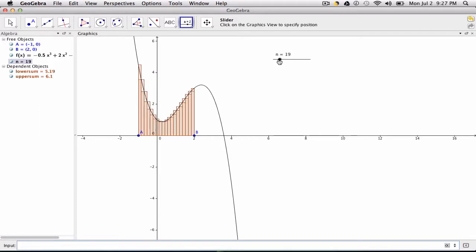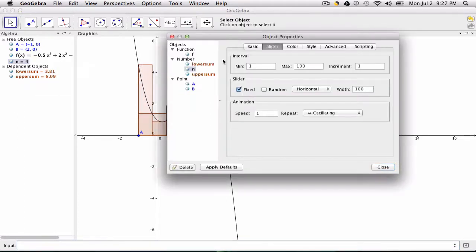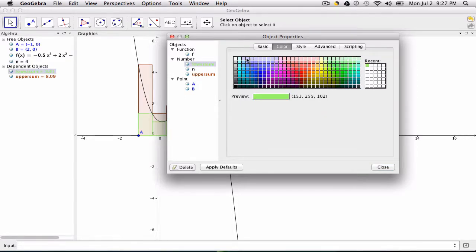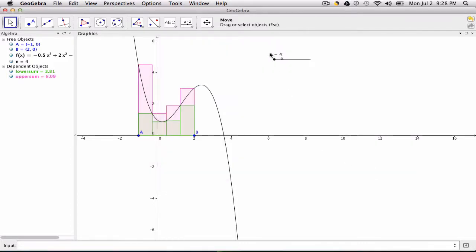Now you could change of course the colors here if you go to your object properties by hitting control command e. Let's say the upper sum is I don't know green and lower sum is darker green and the upper sum is something contrasting like pink. Close this. This might help us see what's happening here or identify the different areas.